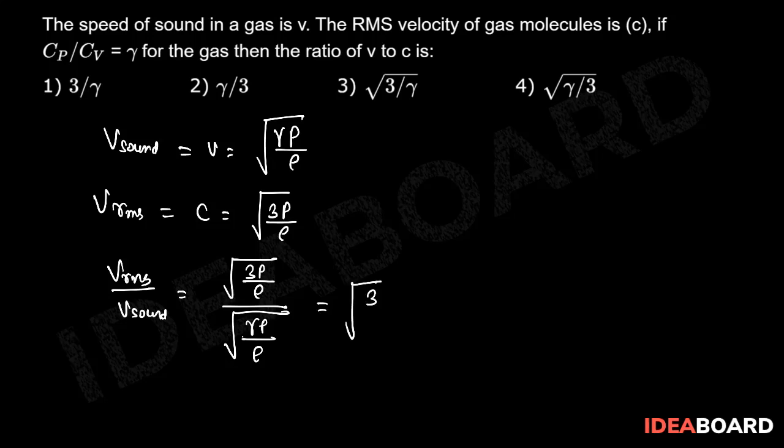Solving it, we will get the value as under root 3 by gamma. So we can write that v by c is equal to under root gamma by 3. Therefore, option number fourth is the correct answer of this problem.